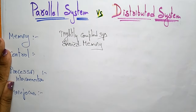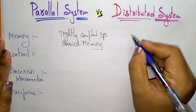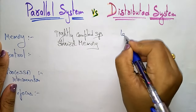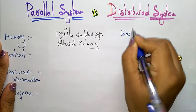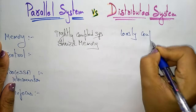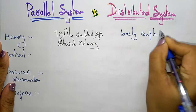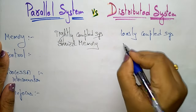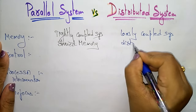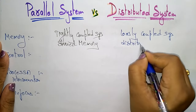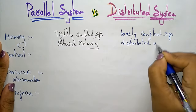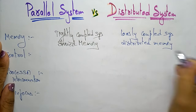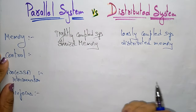Whereas in distributed systems, it is a loosely coupled system because they are using distributed memory — meaning each system has its own memory.